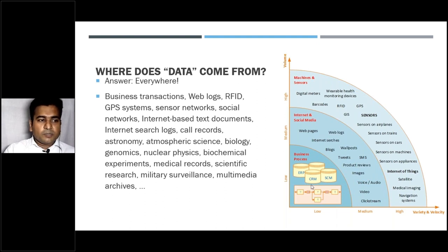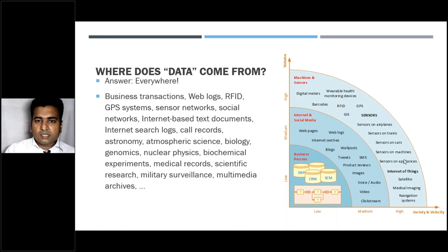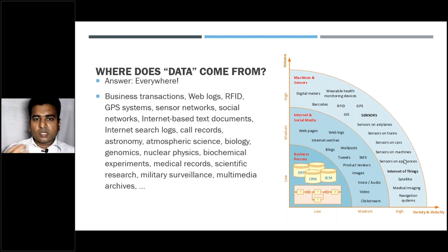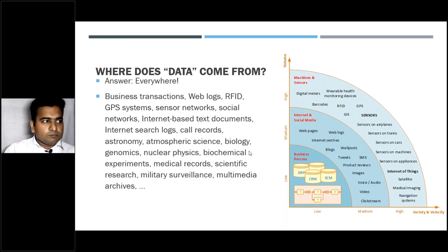From the diagram you can see business process systems like ERPs, CRM, and SCM at one end, along with all kinds of machine sensors - digital meters, barcodes, sensors on airplanes, trains, and machines - all generating large amounts of data. This data is stored on the cloud in an ongoing process. Right now as I'm recording this lecture, whatever I'm sharing is being recorded and stored on the cloud, and you may also be making multimedia archives by recording it on your desktop.